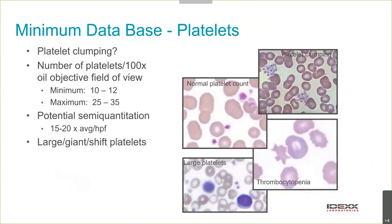Looking at platelets — they're the ones most affected by clumping, which is where a blood film is important. Seeing platelets clumped tells us the count is higher than what the machine reports. On oil objective at 100x, we'd hope to see at least 10 platelets per high-power field in the monolayer. Large platelets indicate immature platelets in circulation, or conditions like Cavalier King Charles congenital macrothrombocytopenia — where there's a low platelet count but larger platelet size, so total platelet mass is normal and they don't have signs of bleeding.